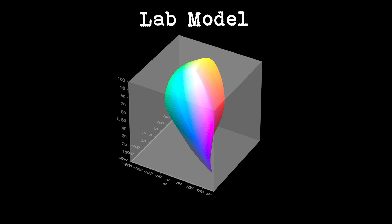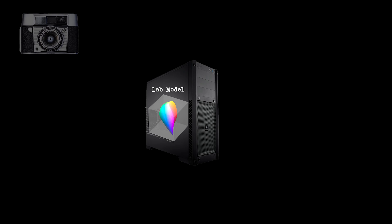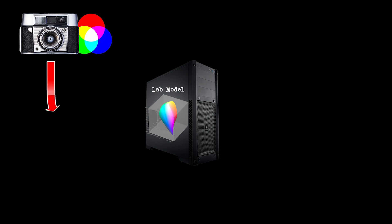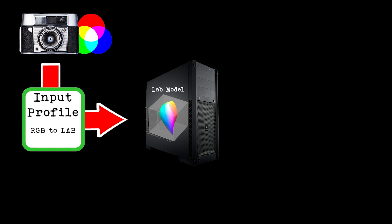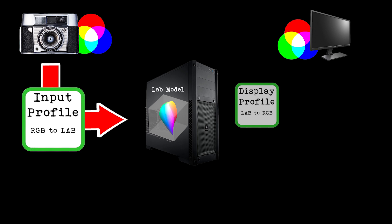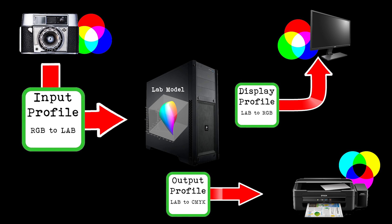Your computer color engine — whether it's Adobe Photoshop, Capture One, or whatever software you use — has the LAB color model to work from. When you take a photo and import it, the RGB camera values in that image go through the input profile to give the computer the corresponding LAB values, so the computer knows exactly where those colors sit on the LAB model. Then to display them on your monitor it converts those LAB values back to RGB values through the display profile, and 99% of the time a modern monitor should do a pretty good job.